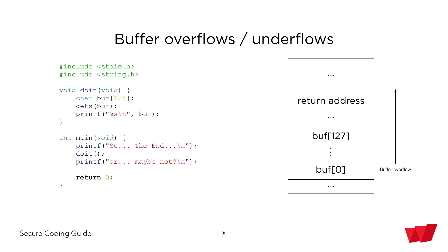If the hacker is smart, he can basically feed the return address to whatever point in memory he wants. For example, he can feed the return address as the buffer itself, so the function will jump to the buffer, and in the buffer he could have fed some code to execute — then that code in the buffer will be executed. This small vulnerability leads to arbitrary code execution. That means that if our program has root access, we can do file operations, send spam emails, do whatever. This small and tiny line of code can do a lot of trouble.